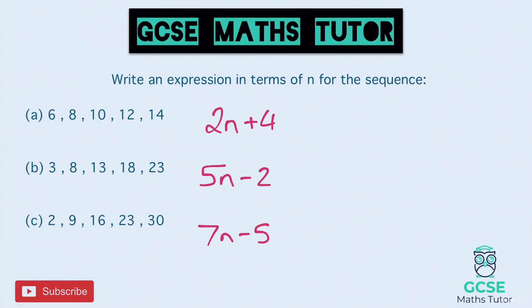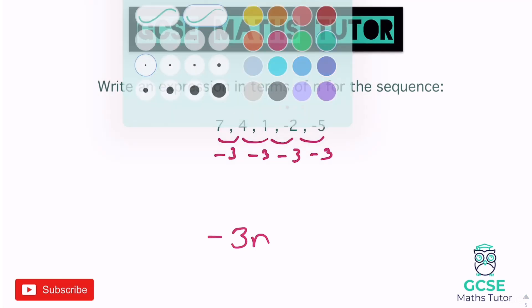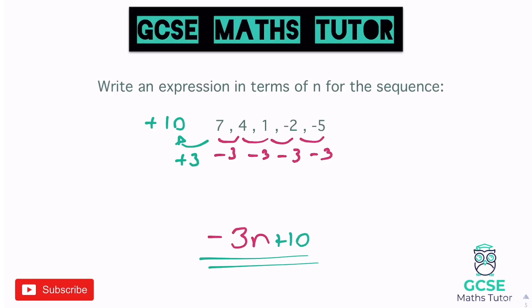Now let's look at sequences that are going down. Each time this sequence goes down by 3, so we put negative 3 — we'd write negative 3n rather than 3n, because it's going down in 3s. Using the trick: since we're subtracting 3 going forwards, going backwards we add 3, which gives us 10. That's positive 10, so our nth term is −3n + 10.